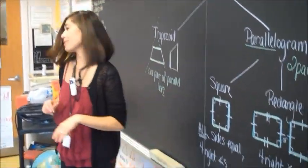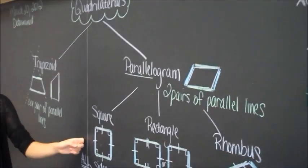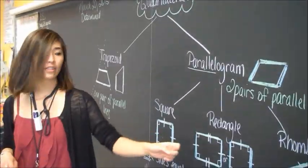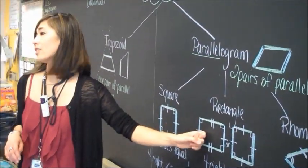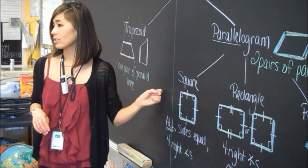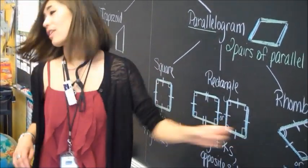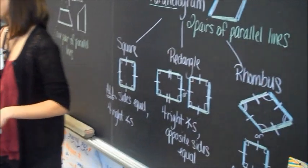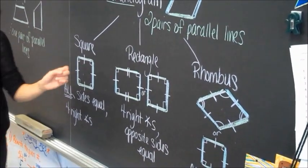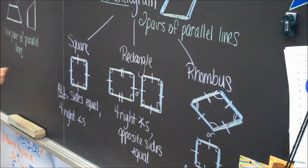There are how many types of parallelograms? Three. Square, rectangle, and a rhombus. Very good. A square — can a square be considered a rectangle? Yes. Are all rectangles going to be squares? No. Good. Is a square considered a rhombus? Yes. Are all rhombuses considered squares? No. Good.